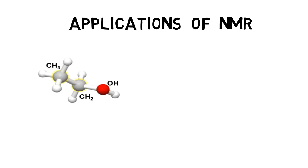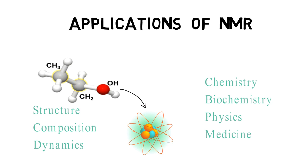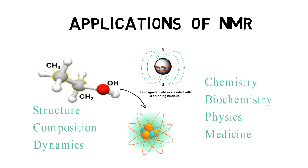NMR is a powerful analytical technique used to study the structure, composition, and dynamics of molecules at the atomic level. It is widely employed in various fields, including chemistry, biochemistry, physics, and medicine. NMR provides valuable information about the behavior of nuclei in a magnetic field and their interactions with other nuclei and their surrounding environment. NMR has a wide range of applications across different scientific disciplines.